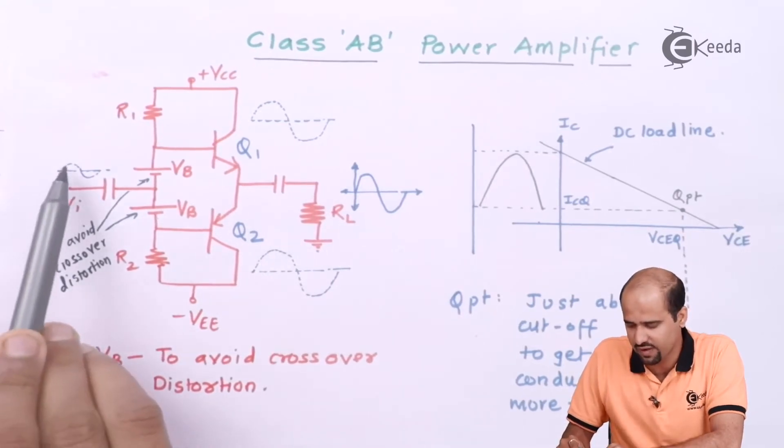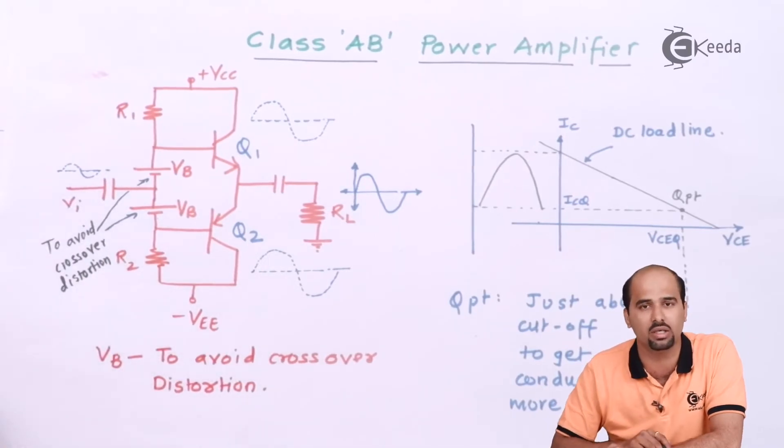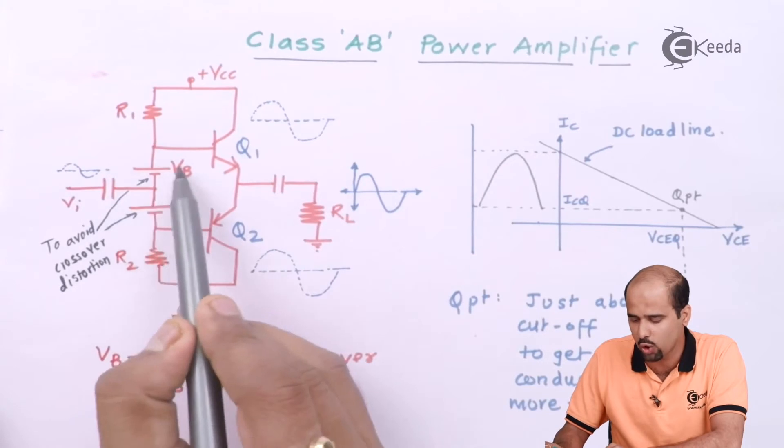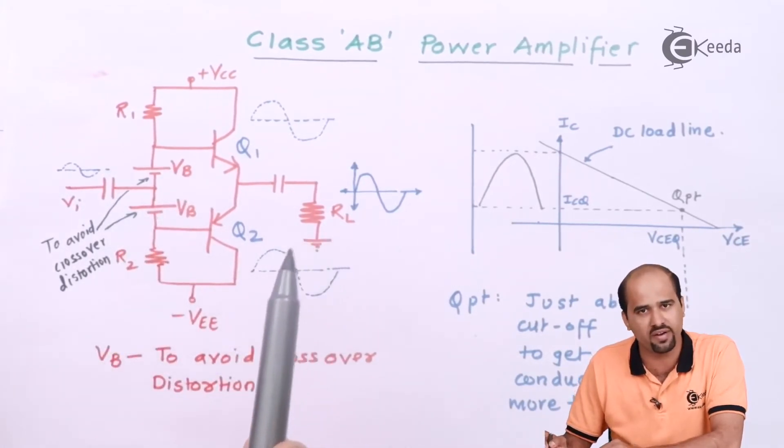Let's study in the positive half cycle what happens. In positive half cycle, whenever we have learned the class B power amplifier that was just without VB bias. That forms your class B power amplifier as it is.